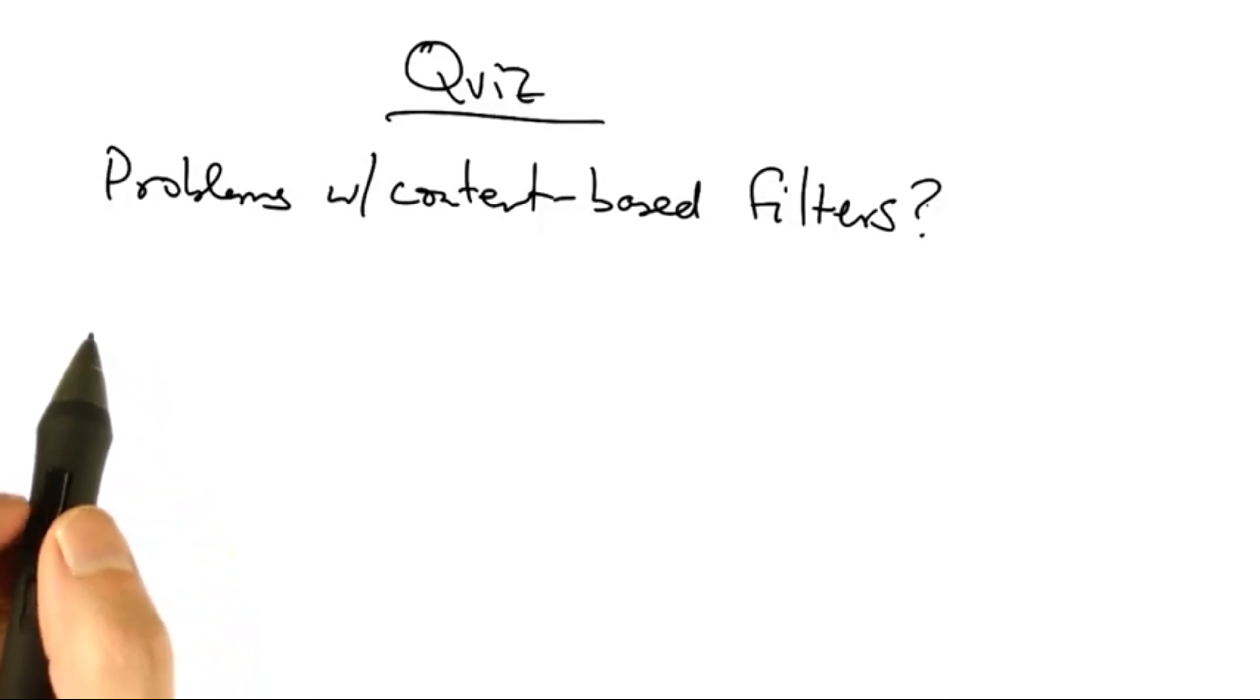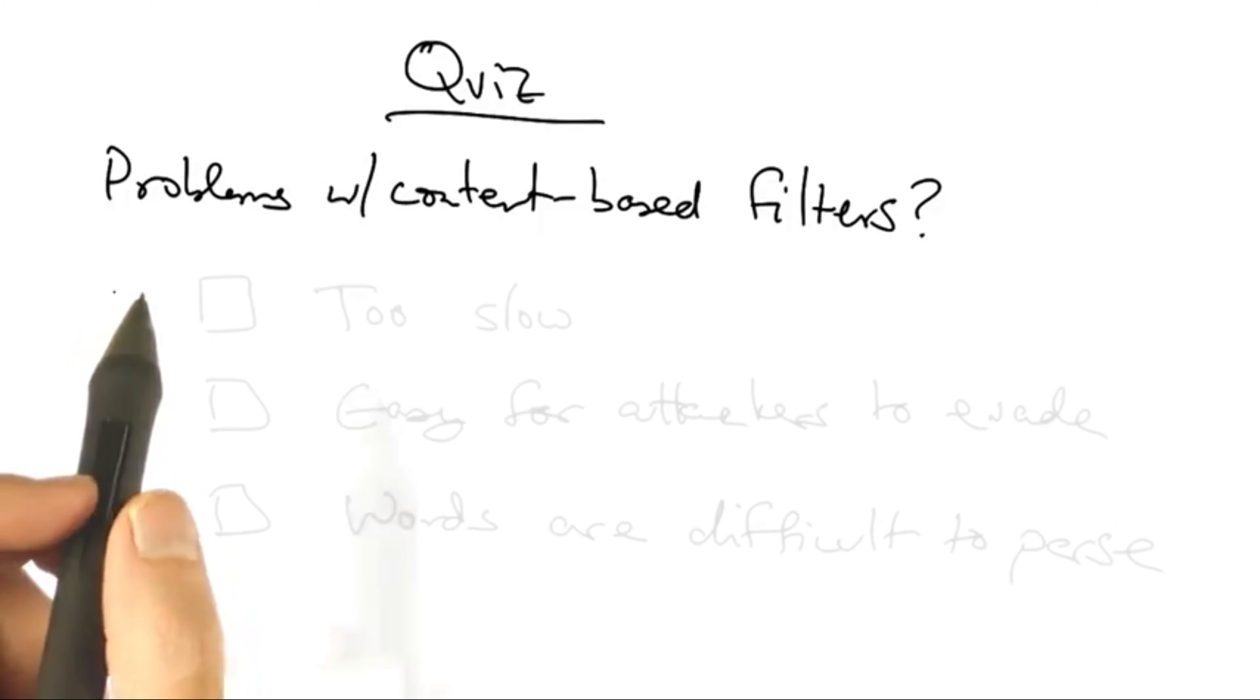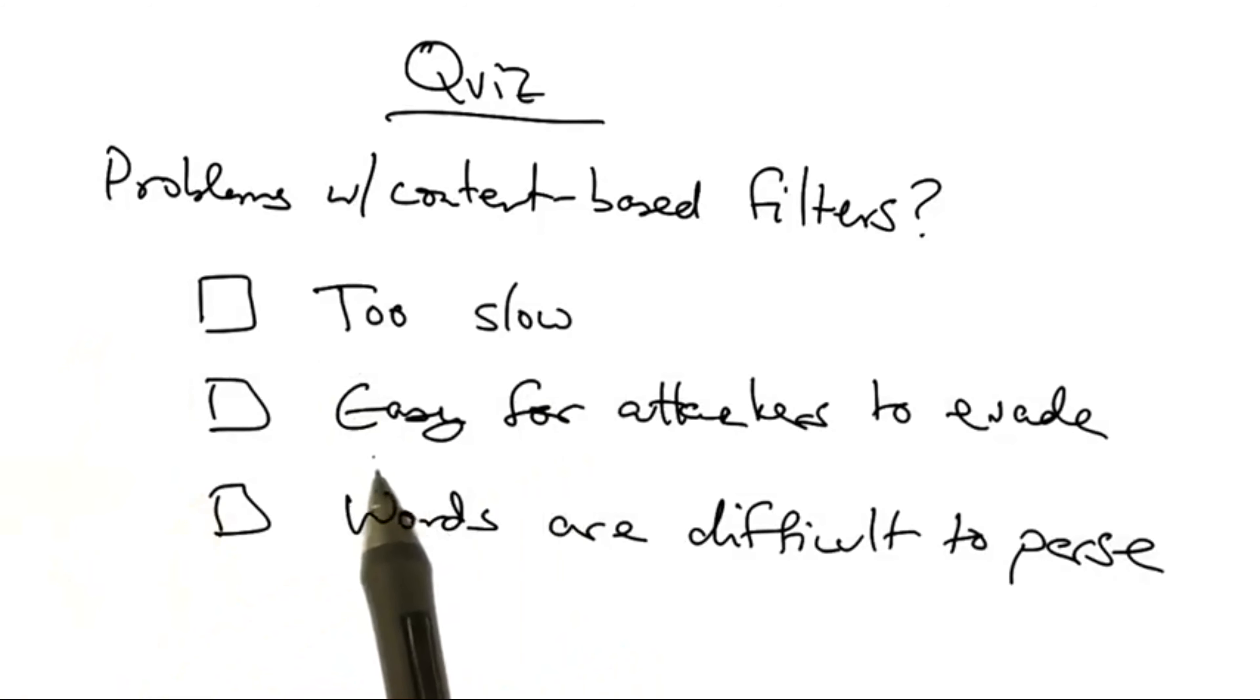So as a quick quiz, what are some problems with content-based email filters? Are they too slow? Are they easy for attackers to evade? Or are words in text of emails difficult to parse? In this case, please choose the single best answer.